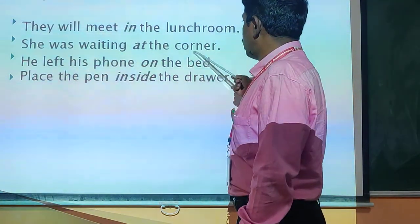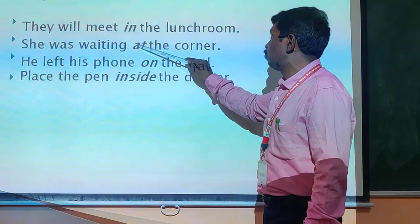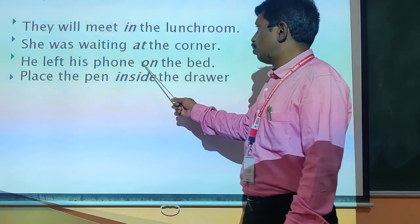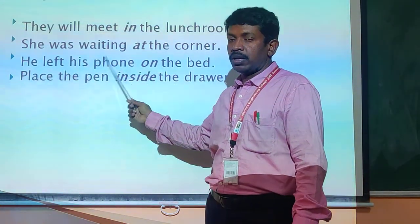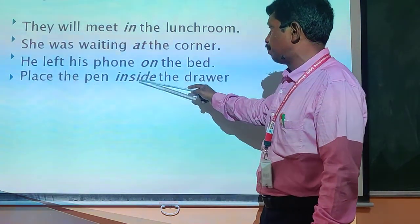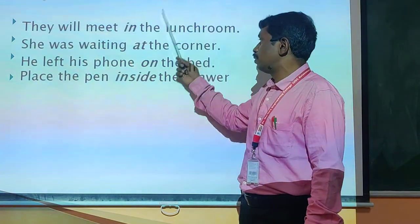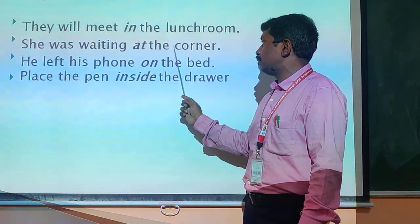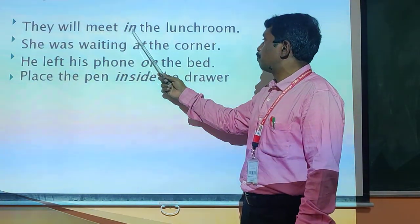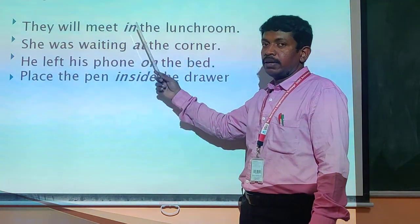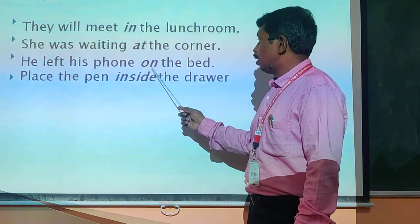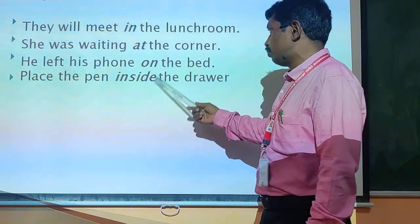She was waiting at the corner — this is a preposition of place. He left his phone on the bed — 'on the bed' is the preposition of place. Inside the dryer — 'inside' is the preposition of place. All are showing place. Whereas prepositions of time show months, years, and decades, these show a particular place. 'On' here is used for days like on Sundays, on mid-days.